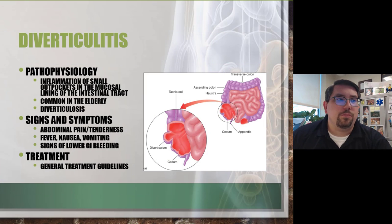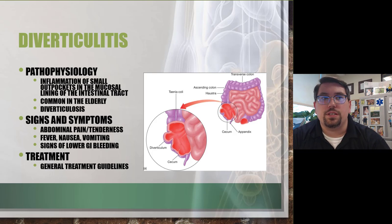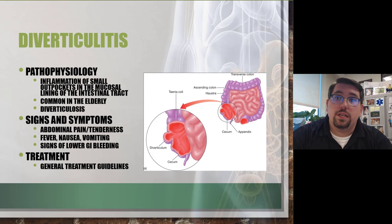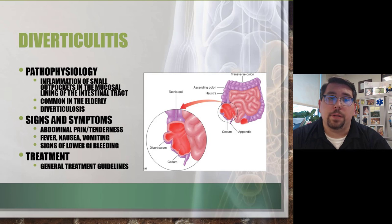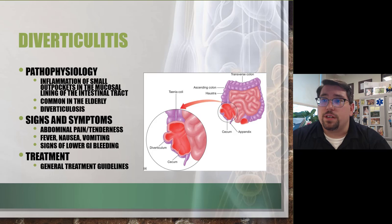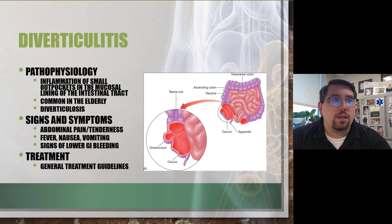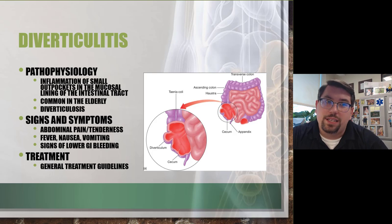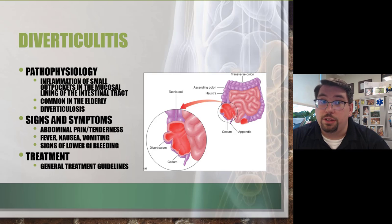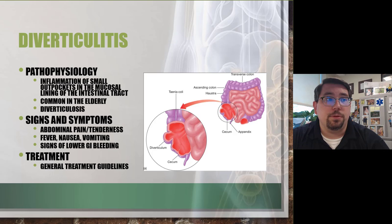Diverticulitis is a relatively common complication of diverticulosis — a condition characterized by the presence of diverticula, which are little outpouching pockets in the intestines. These can easily become clogged with seeds, nuts, or food, leading to inflammation and infection. It's very common in the elderly. Signs and symptoms include abdominal pain and tenderness, fever, nausea, vomiting, and signs of GI bleeding. It's associated with low-fiber diets, which cause sluggish stool movement. The colon responds with muscle spasms, raising pressure on contents to push fecal matter forward.